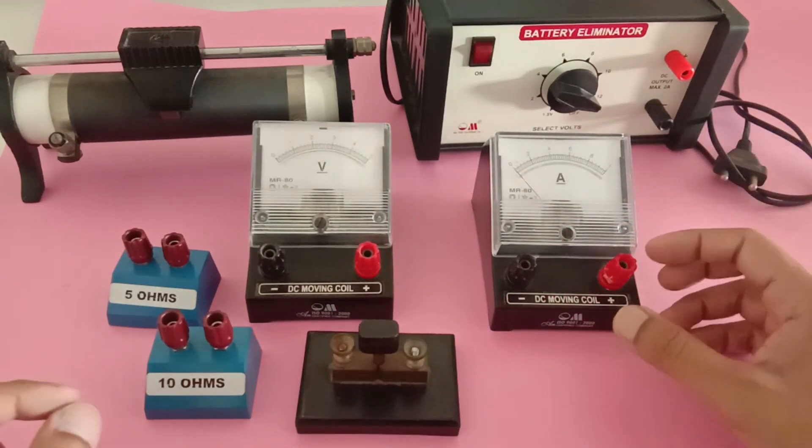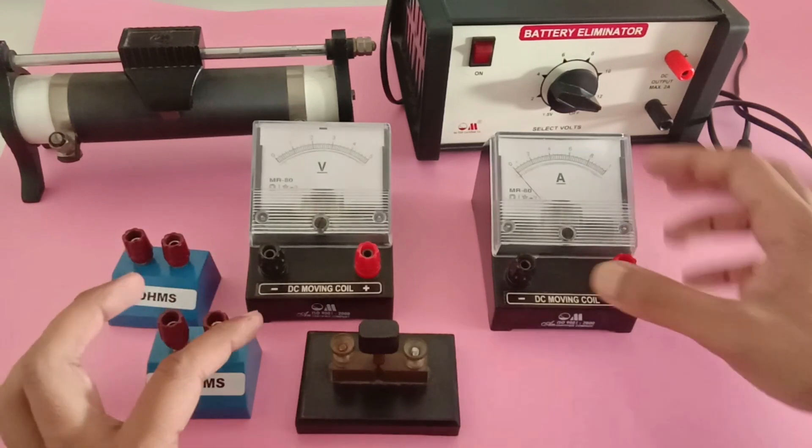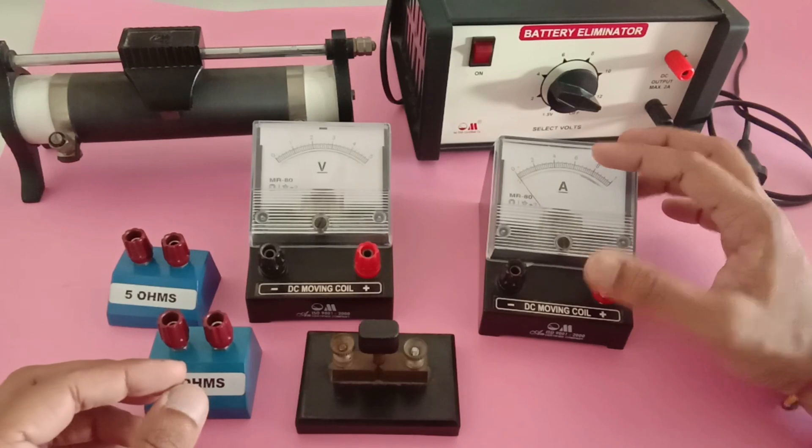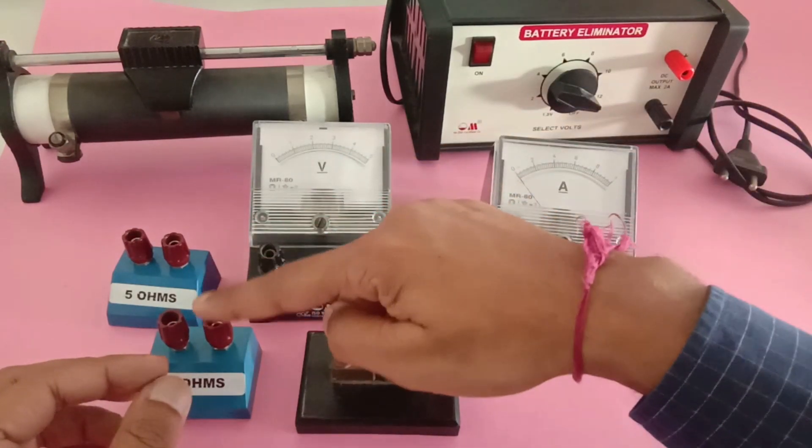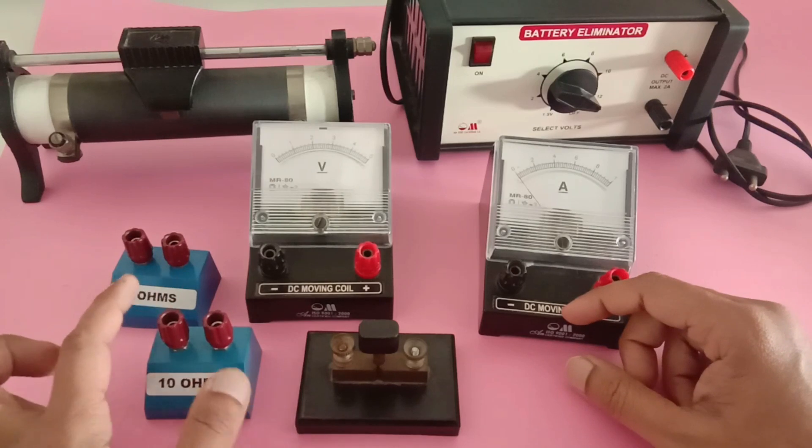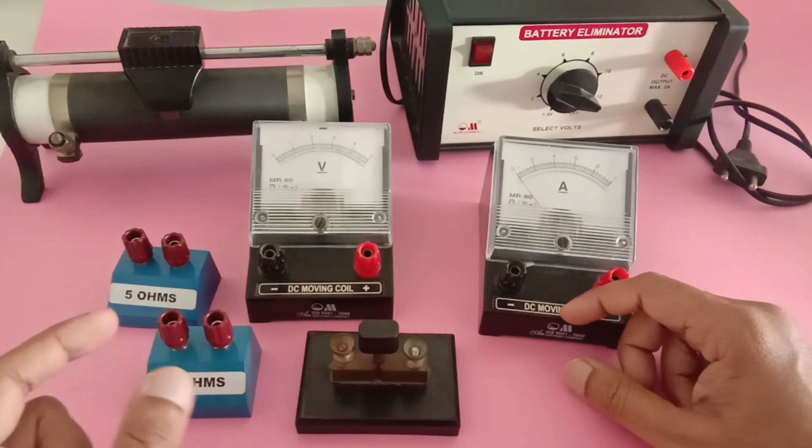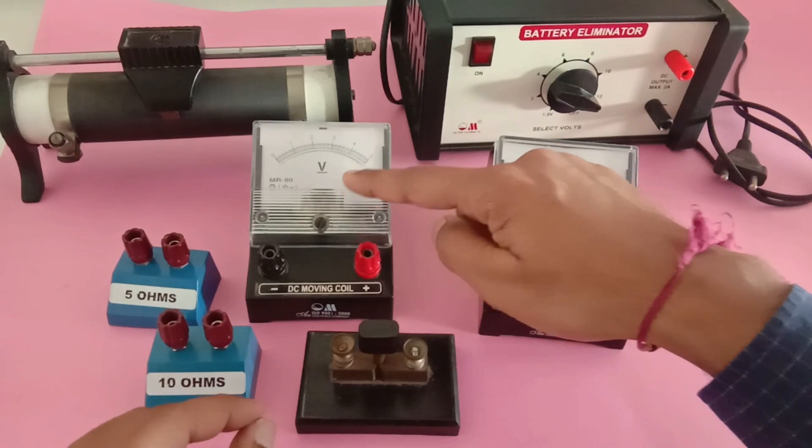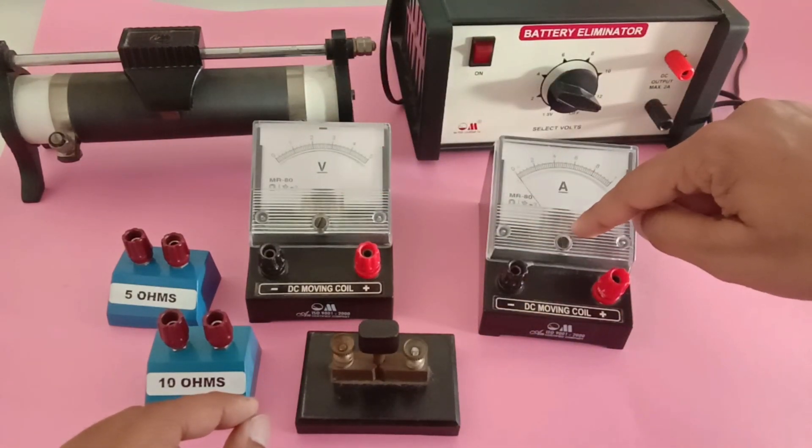A few basic things about these devices: this ammeter measures the electric current, this voltmeter measures the potential difference across the resistances. These two resistances can be connected in series or parallel.